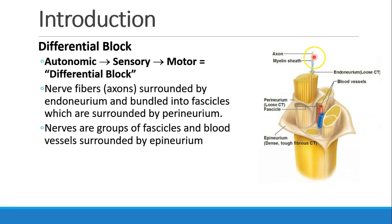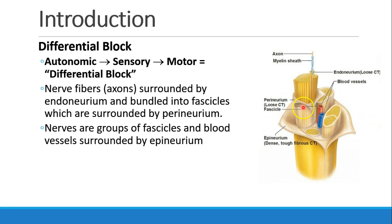Here's an axon. The axons are surrounded by endoneurium. Then they are bundled into fascicles, and the fascicles are surrounded by perineurium. CT here stands for connective tissue — loose connective tissue. That's what the endoneurium and the perineurium are. These fascicles are then bundled into nerves. A nerve is a group of fascicles together with some blood supply, and the whole nerve is surrounded by epineurium, which is a dense, tough, fibrous connective tissue.